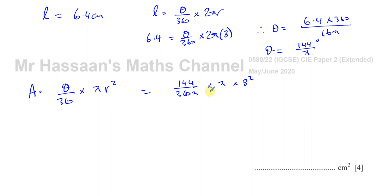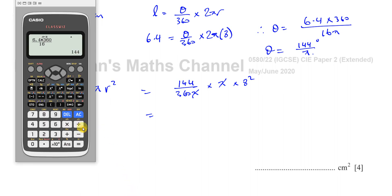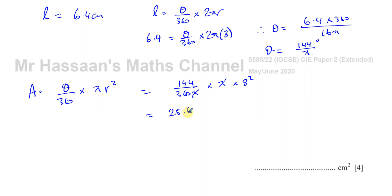So one of the benefits of leaving it in terms of pi, the pi's will now cancel out here. So you have 144, okay, divided by 360, okay, that's 2 fifths times 8 squared, which gives us 25.6.